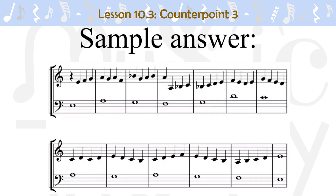Write 3rd species counterpoint above this Cantus firmus. Sample answer shown. The first measure of this exercise contains a quarter rest followed by 3 quarter notes. The 3rd beat is a dissonant passing tone. The 2nd measure has a dissonant lower neighbor tone on the 2nd beat. The 3rd measure has a dissonant passing tone on the 3rd beat. Notice that a Bb is used on the 1st beat to avoid a leap of a tritone.